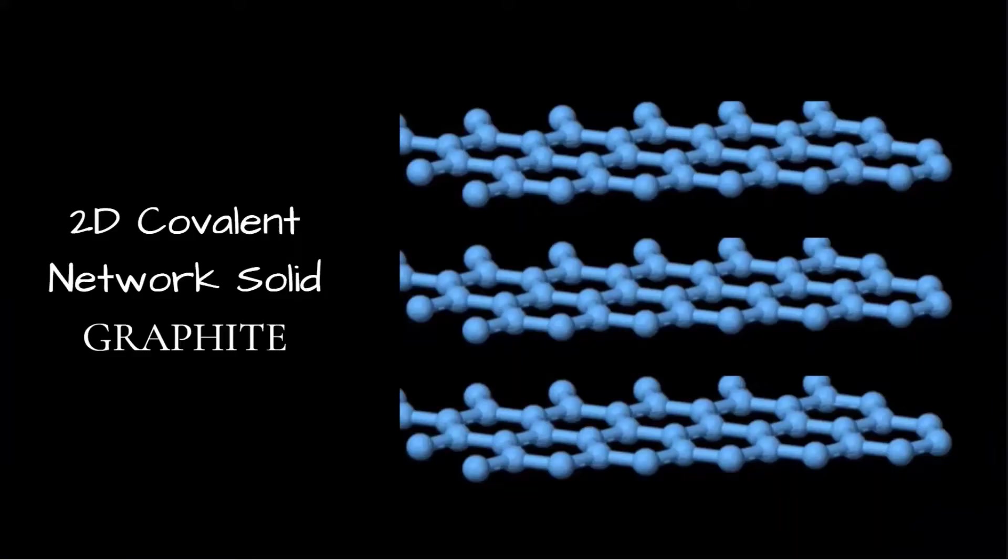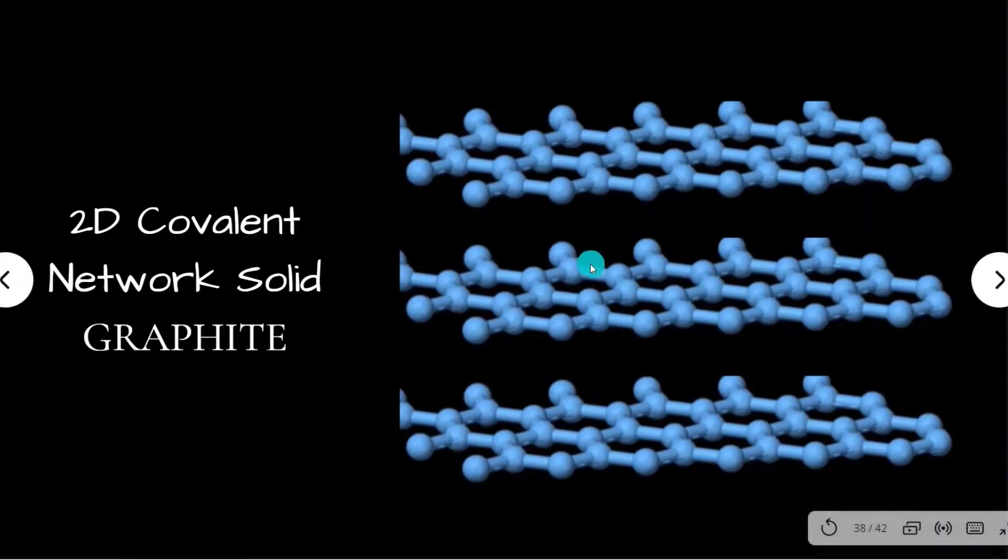Graphite is a 2D covalent network that has a unique set of properties due to its unusual structure. Graphite is made up of carbon atoms covalently bonded to three other carbon atoms. The carbon atoms are arranged in rings that form a hexagon shape and form flat sheets that extend in two directions. These flat sheets are held together by weak intermolecular forces, Van der Waals forces, like those found in molecular solids.